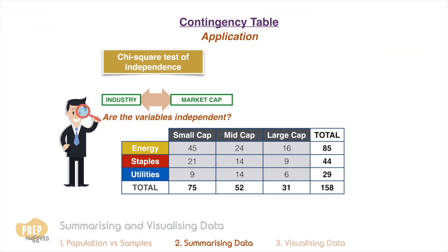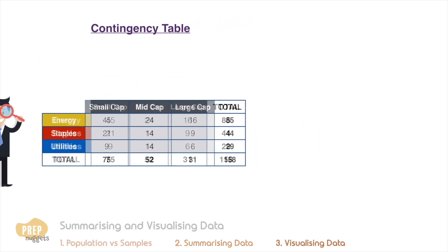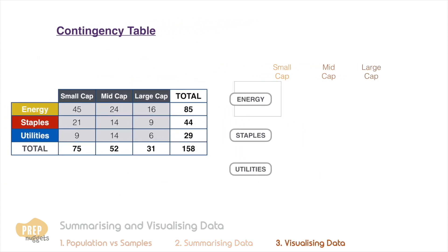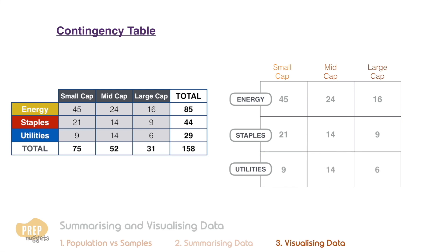One application of a contingency table is to determine whether two variables are independent. The chi-square test of independence, which you'll learn later in this course under hypothesis testing, is one such approach to test if the variables are independent using the contingency table.